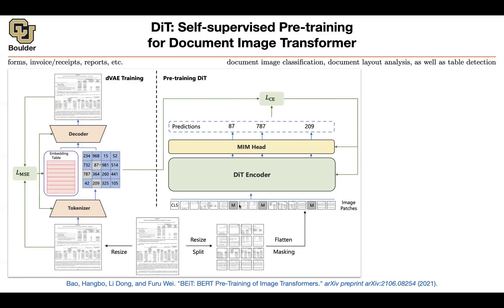Mask your document, push it through your encoder, which is a transformer architecture — standard, perhaps a 12-layer or 24-layer standard transformer. And then you are doing your predictions, predicting these tokens or token indices. This is pre-training. You are going to do that on a lot of data, a lot of documents.